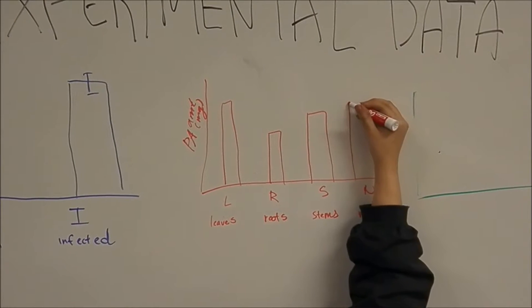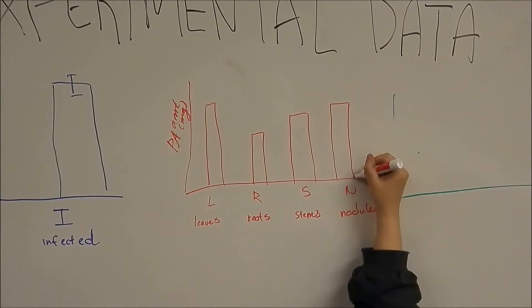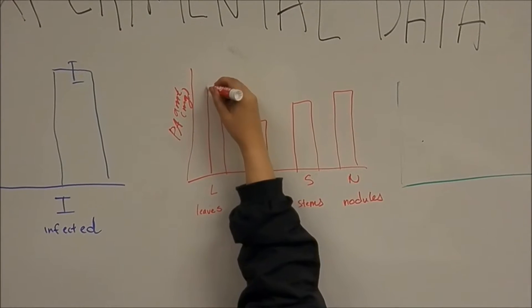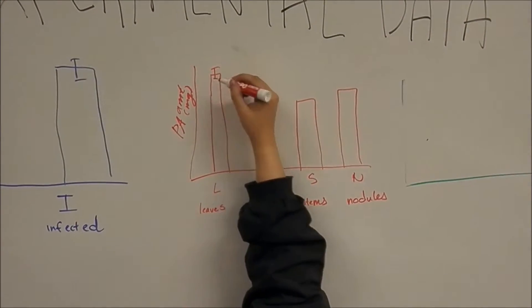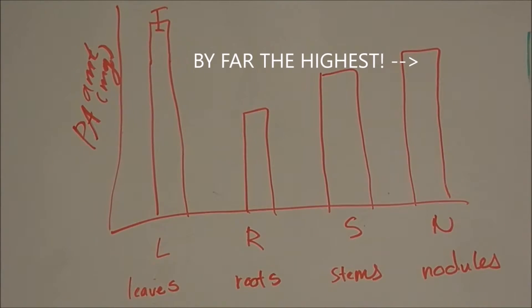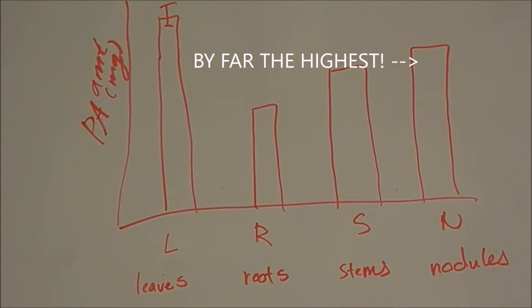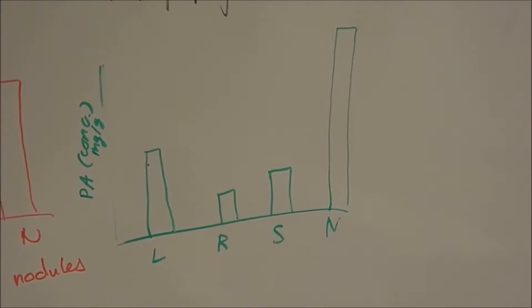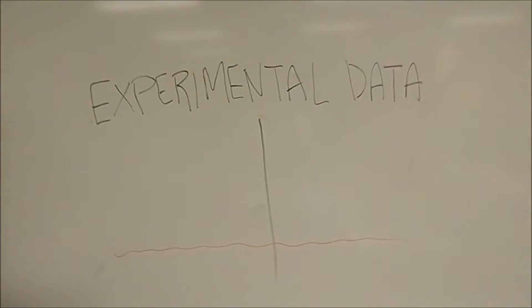When compared with absolute amounts of alkaloid in the infected plants, the greatest PAs per plant individual were found in the leaves. However, when concentration in milligrams per gram dry weight was considered, it was by far the highest in the nodules. In fact, the nodules had 10 times greater concentration than the leaves, indicating that nodules are the site for PA biosynthesis.